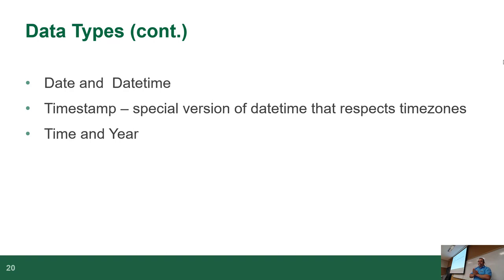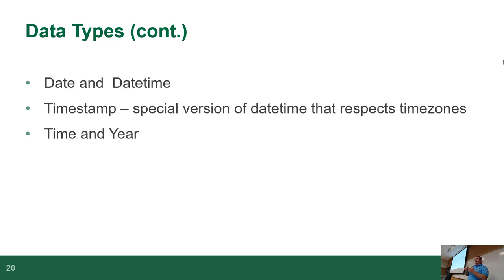We have date and timestamp types. DATE is self-explanatory — holds a date. DATETIME holds date and time. Depending on the database server, datetime may have different precision. Postgres is really popular in the scientific community because it's accurate to five digits of precision below a second — down to a millionth of a second. MySQL, by comparison, only goes to two places of precision.